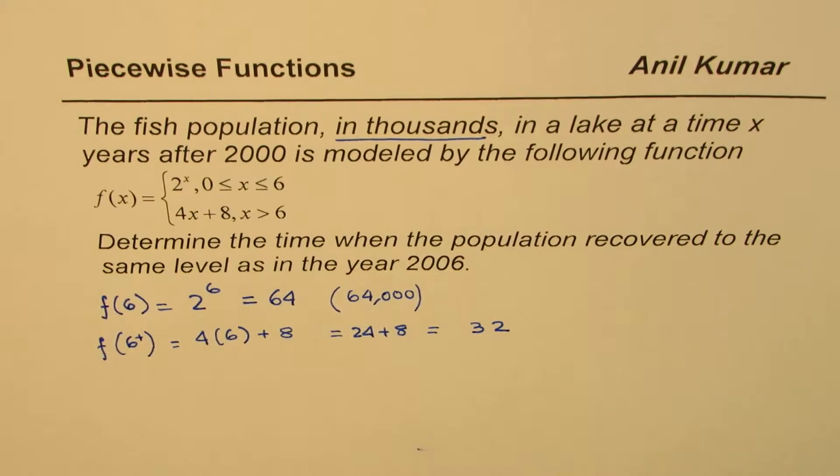So it is 32, it is almost half of it. So maybe because of whatsoever reason, this population dropped to half of it immediately after the sixth year sometime. So that piecewise function really indicates a drop in population. So it results into a jump discontinuity. So let me sketch and show you how it looks like.